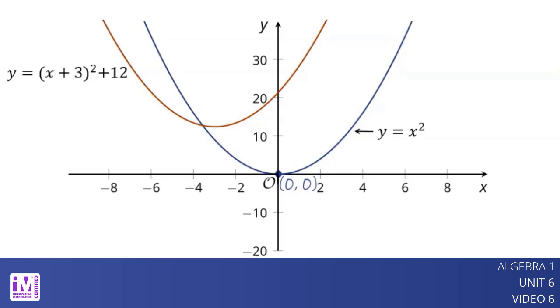Its vertex is at negative 3 comma 12. The graph representing the equation y equals negative the quantity x plus 3 squared plus 12 has the same vertex at negative 3 comma 12.